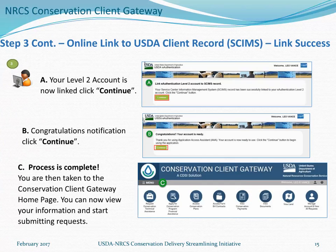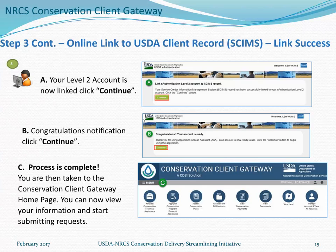When your eAuthentication account and client record are successfully linked, you'll be taken to a confirmation screen. Click Continue and you'll see a screen that says Congratulations, your account is ready to use. Clicking Continue again takes you into the Conservation Client Gateway homepage, where your name will appear on the right-hand side and you'll see quick access icons. You will then be able to view your information and start submitting requests. If at any time you have problems using the site, remember you can contact the Conservation Client Gateway Help Desk for assistance. Thank you for your interest in using the Conservation Client Gateway.